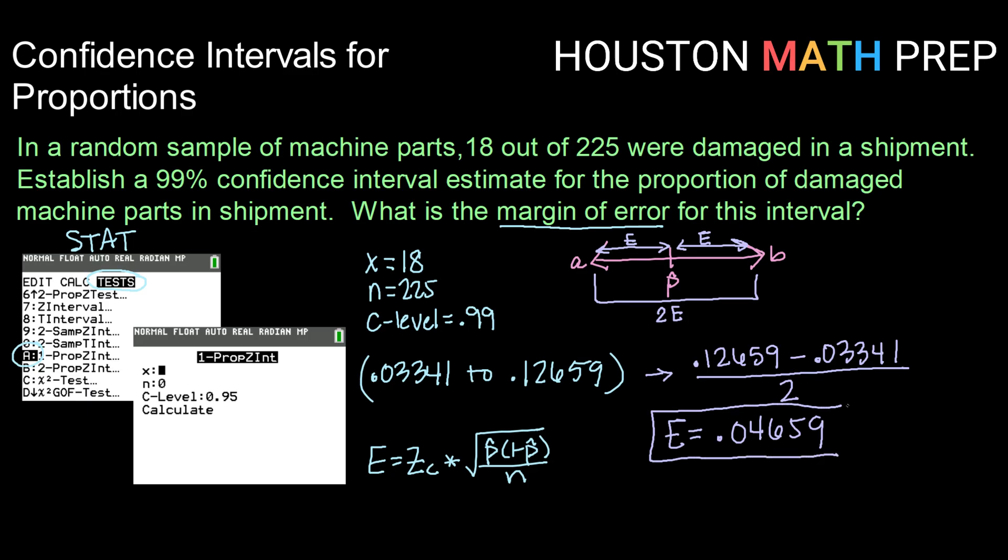If you've already got your interval, or if you've used a calculator to get your interval, and you're asked for your margin of error, you don't have to start back with a formula. What you can do is take the width of your interval by taking the top value minus the bottom, and dividing it in half. That will calculate your margin of error, in this case, 0.04659.